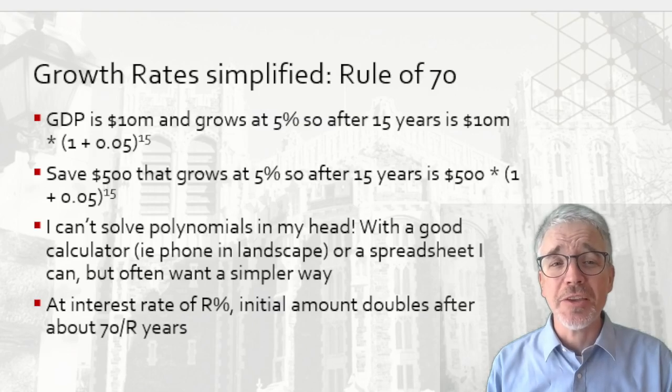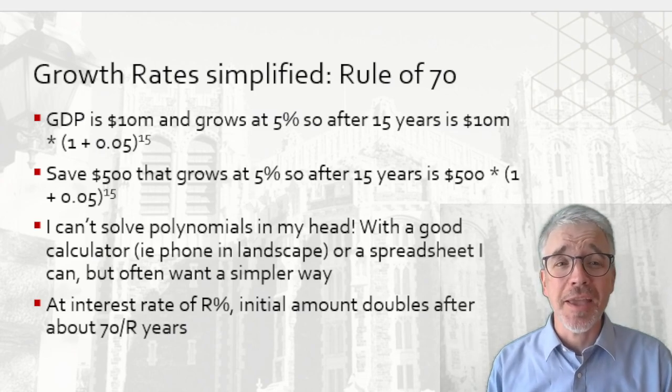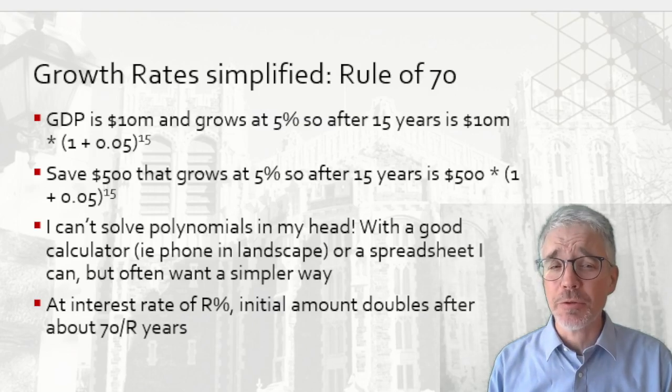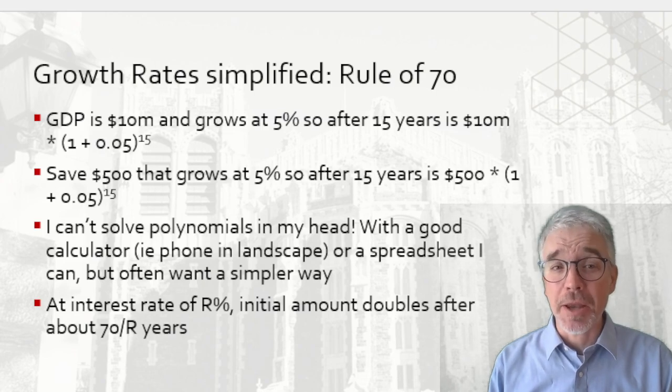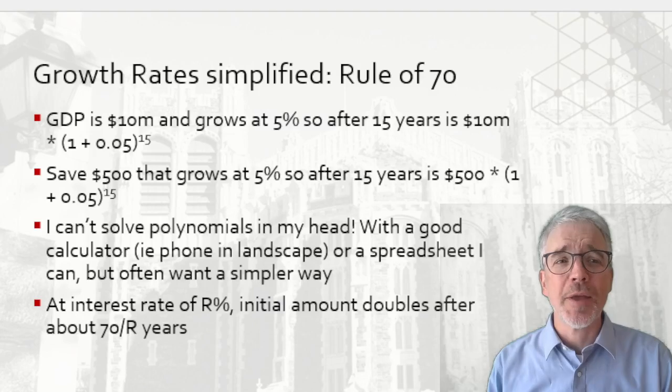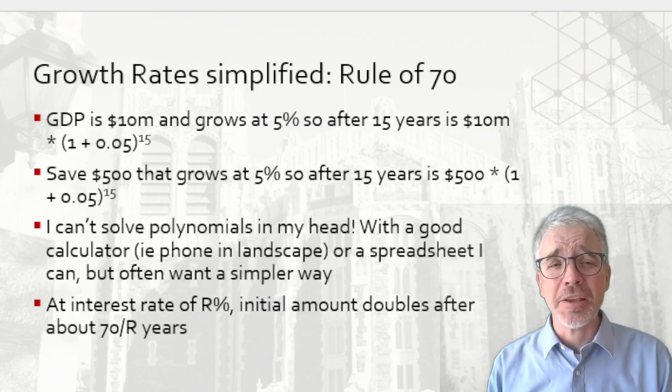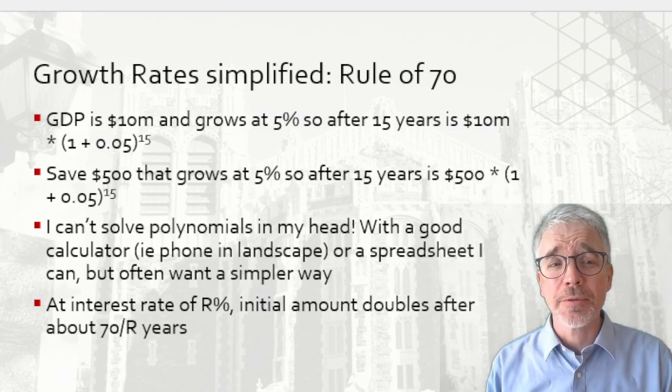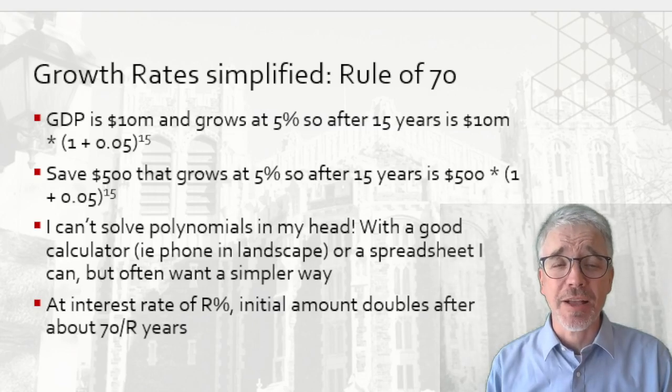The rule says the initial amount will double after about 70 divided by r years. So really, the only complication here is we're going to keep the percent as a regular number. Do not convert here. 5% is not 0.05. It's just the number 5. So about how much time does it take to double an initial investment at a 5% rate? Well, 70 divided by 5 is 14. So about 14 years to double the initial investment at a 5% growth rate.